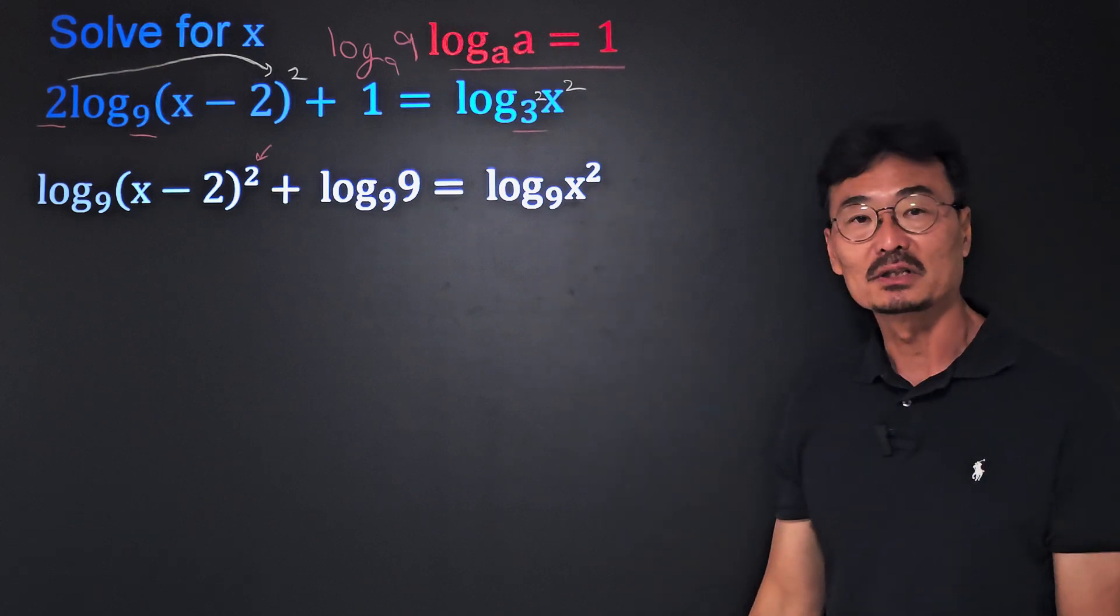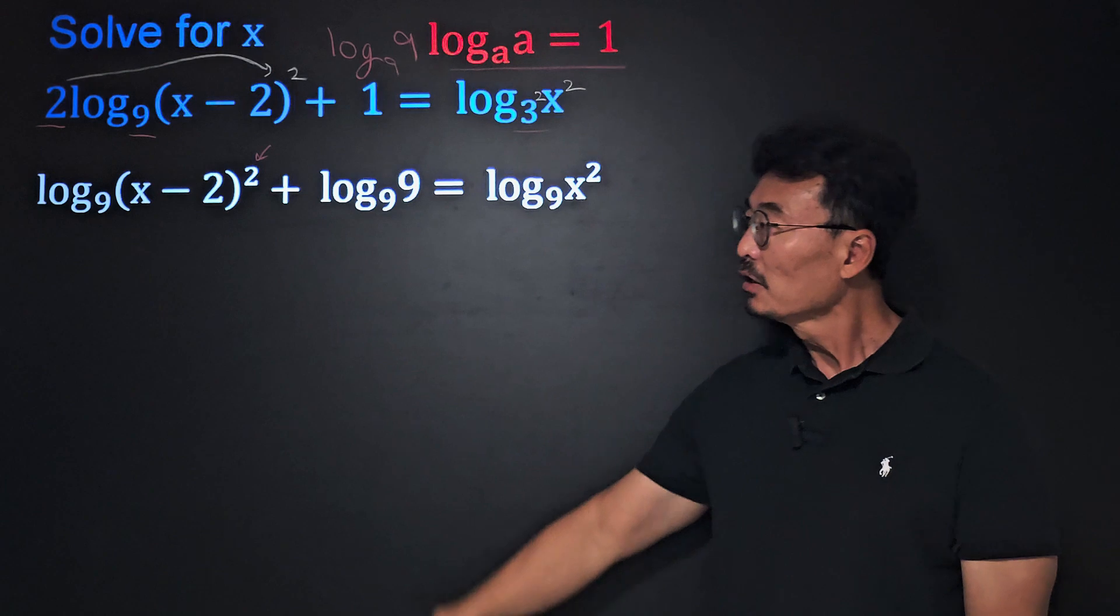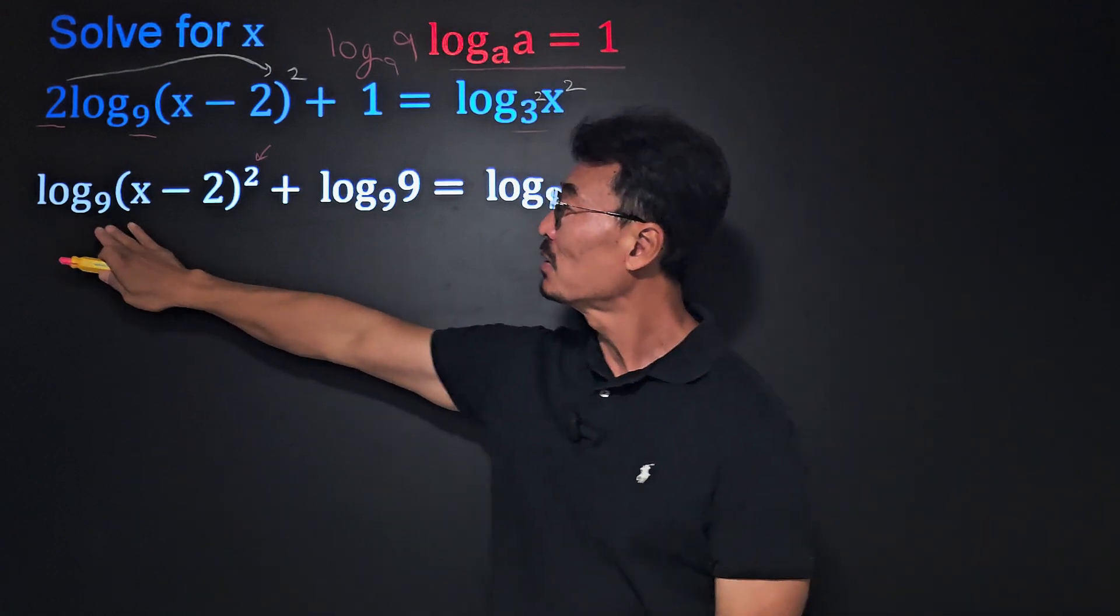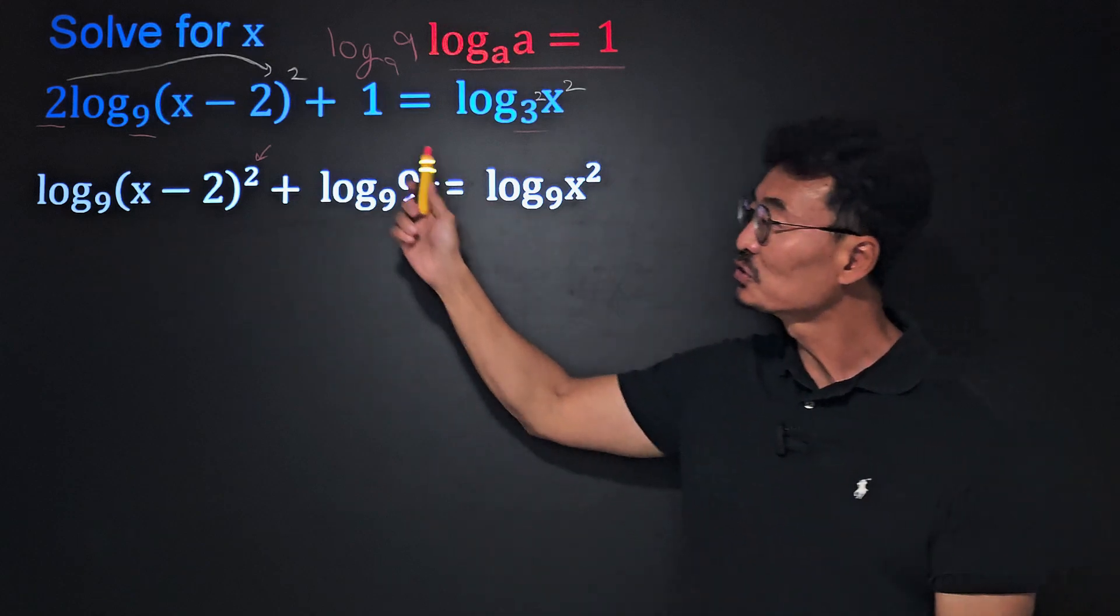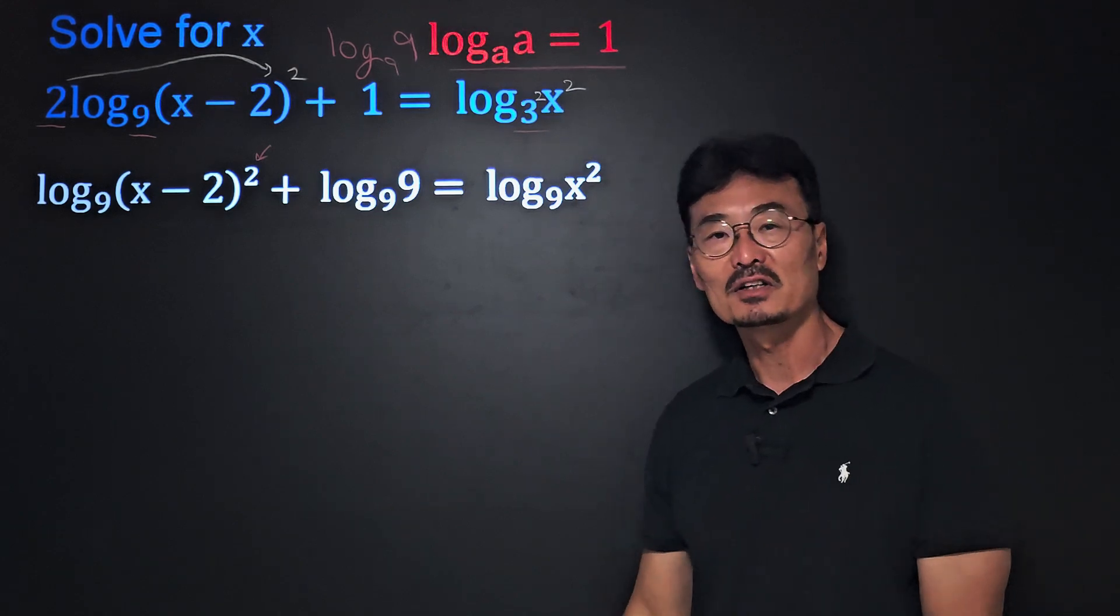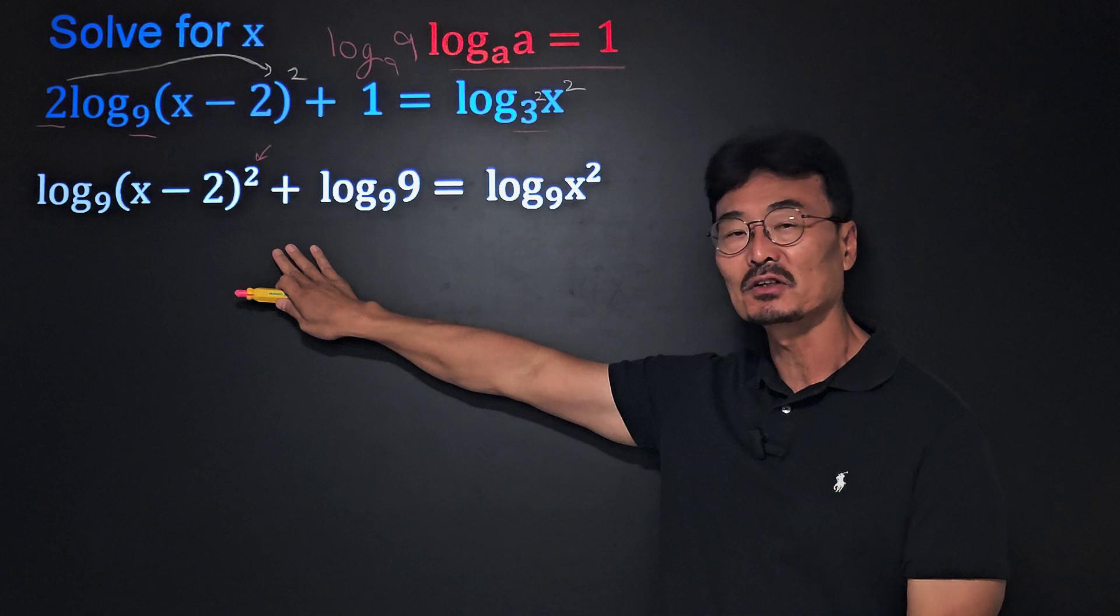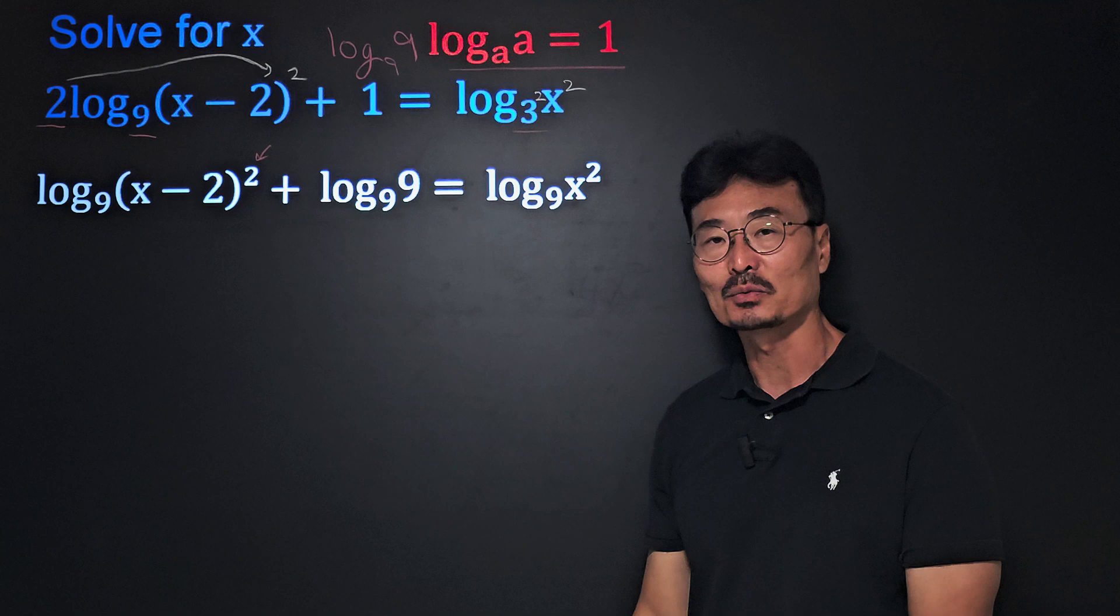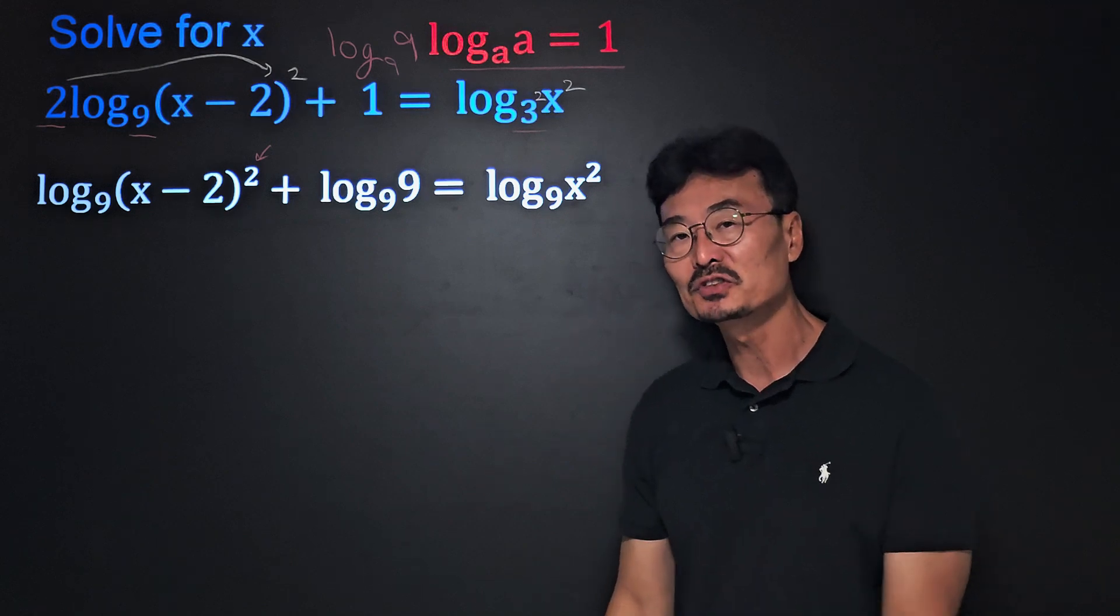As you can see, I squared the 3, got a 9, and I squared the argument as well. One of the common mistakes students make often is that when we have log in the equation then let's just go ahead and cross out the logs. And we can't do that. The only time we could cancel off the log is when we have one log expression on the left side of the equal sign and one log expression on the right side of the equal sign.